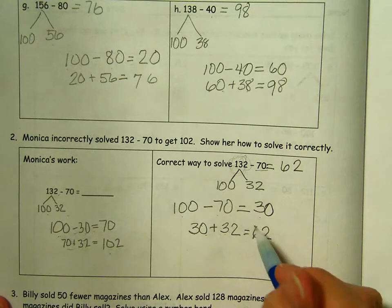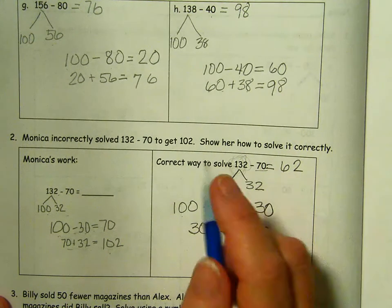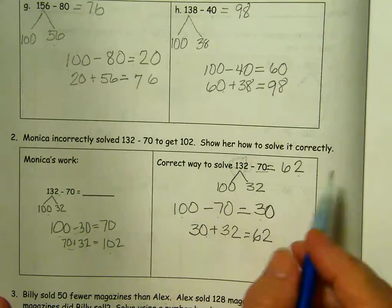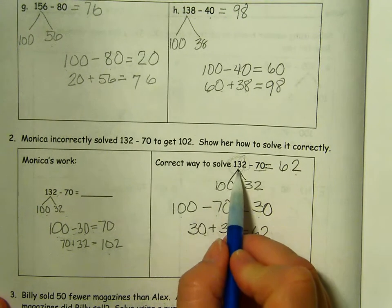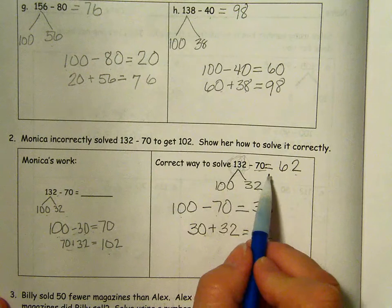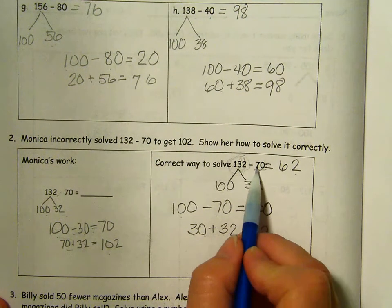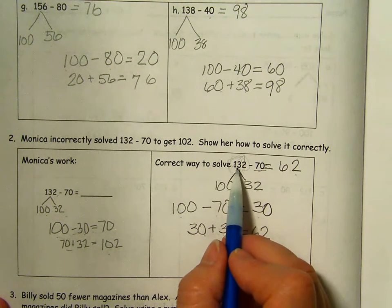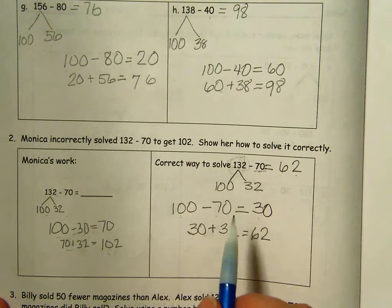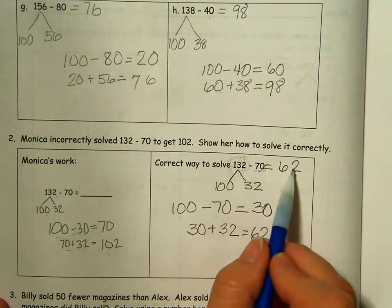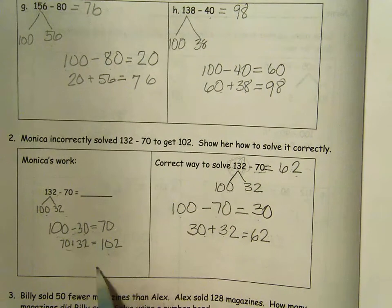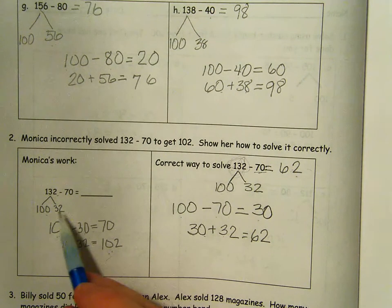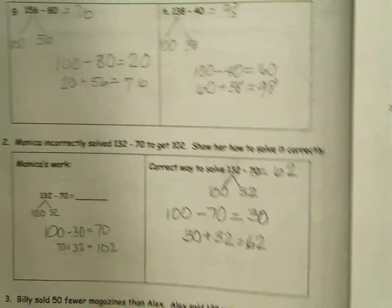The way to check your work when you're subtracting is to add the two parts together. So we took 70 away from 132 and got 62. If we added these two parts back together, we should get 132. So 0 and 2 is 2. 7 plus 6 is 13. 13 tens or 130 and 2 ones. So when you add your parts back together, you should get the whole. If you added 102 to 70, you'd get 172. Always a good idea to check your work.